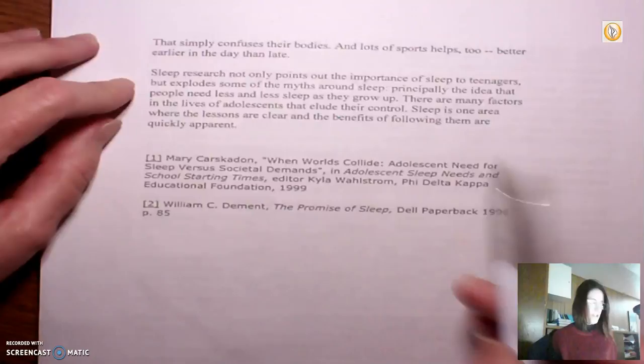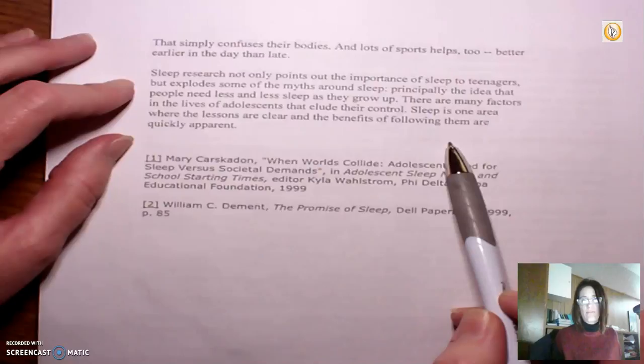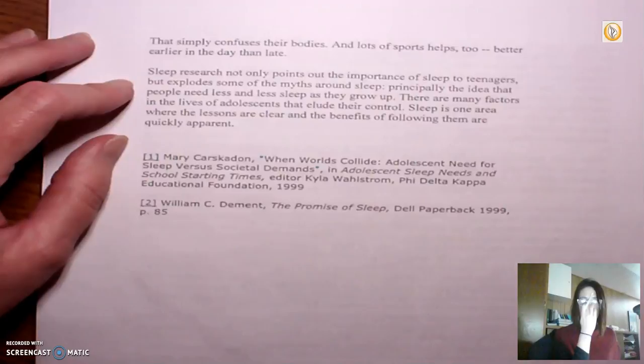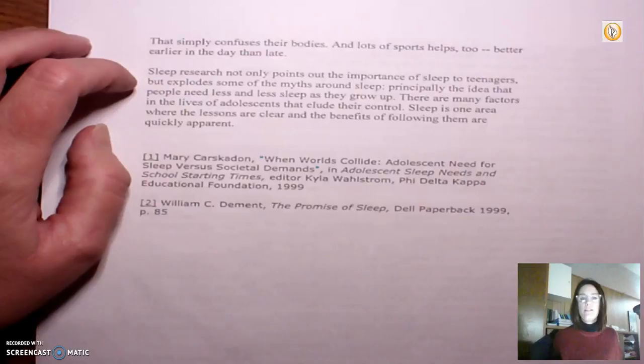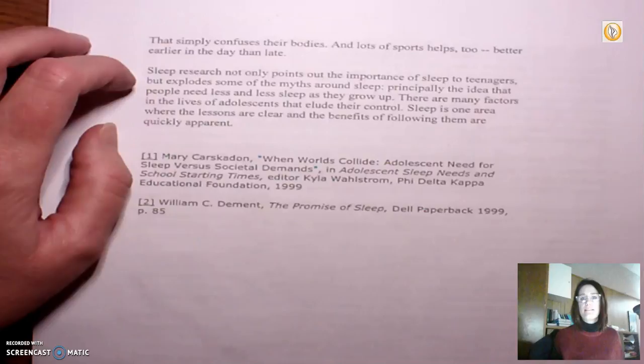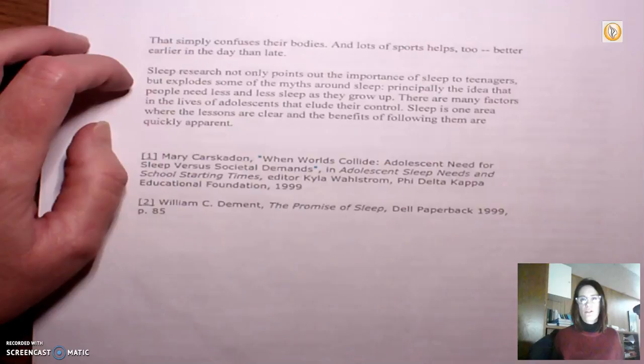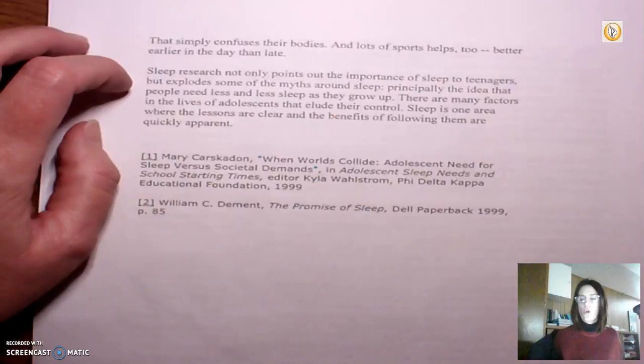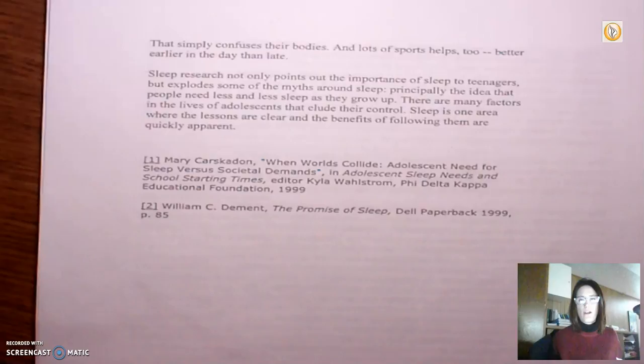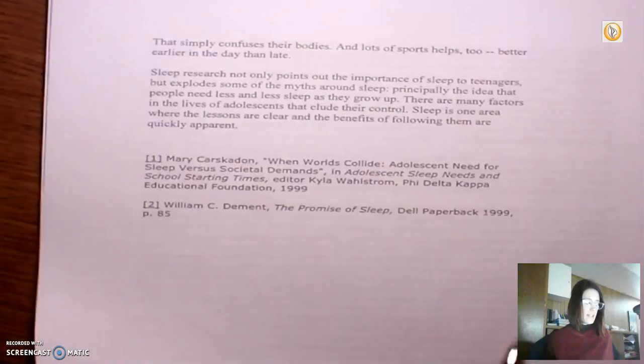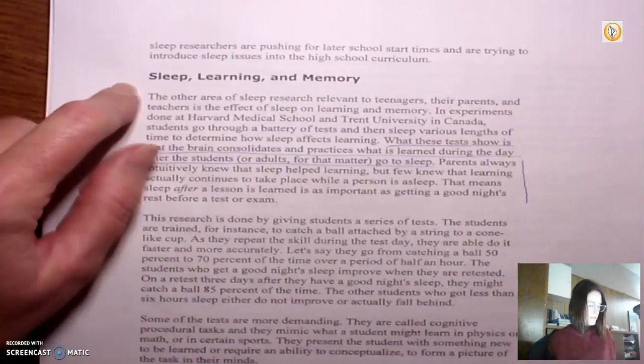So let's go to the last paragraph. I kind of went over the first paragraph there. I sort of summarized the whole article, didn't I? So the very last paragraph, such a wealth of information, because a good author is going to summarize everything for you in a way that's simple and consolidates what we've learned. So let's go ahead and read this. Sleep research not only points out the importance of sleep to teenagers, but explodes some of the myths around sleep, principally the idea that people need less and less sleep as they grow up. There are many factors in the lives of adolescents that elude their control. Sleep is one area where the lessons are clear and the benefits of following them are quickly apparent. Okay, so what we know from this last paragraph is that sleep is incredibly important. And if we go back into the rest of the article, we know that sleep is absolutely vital to learning and to memory. We have a subtitle here. And if we're looking for more information, we could go into this section of the article. So I think I have enough to get started on a central idea.